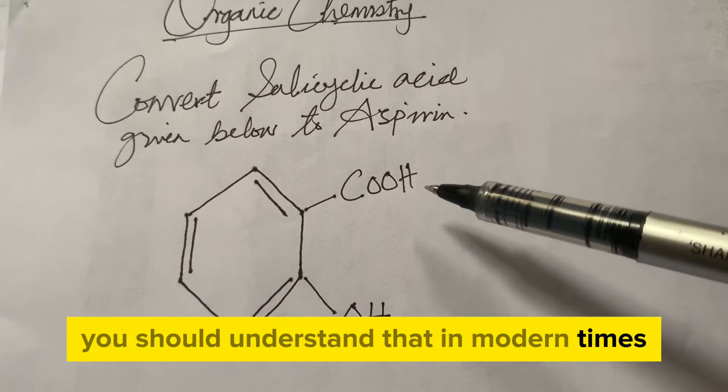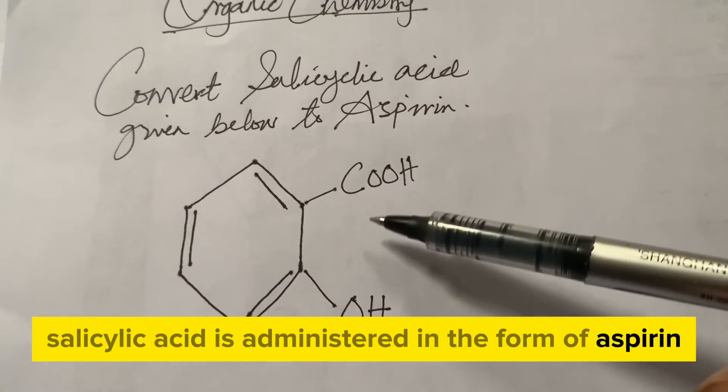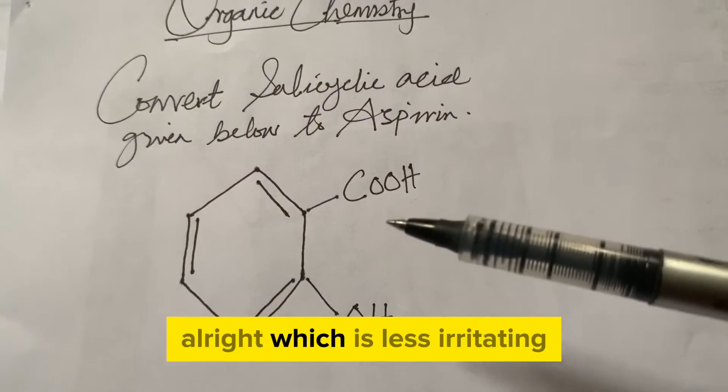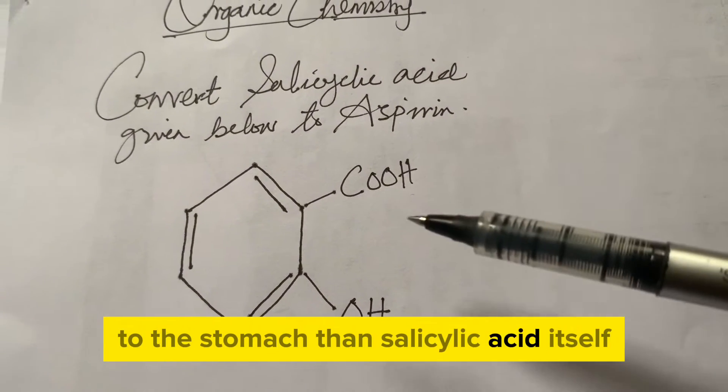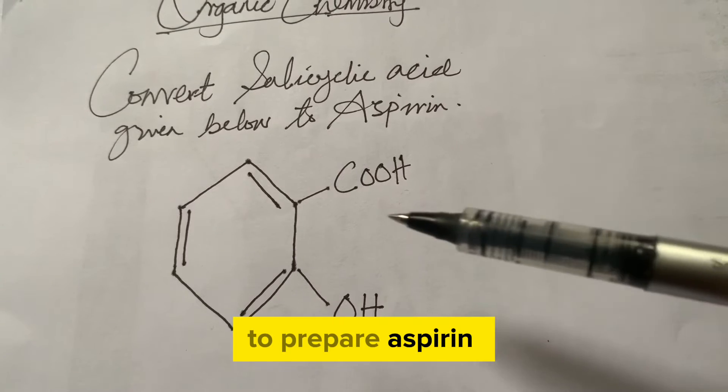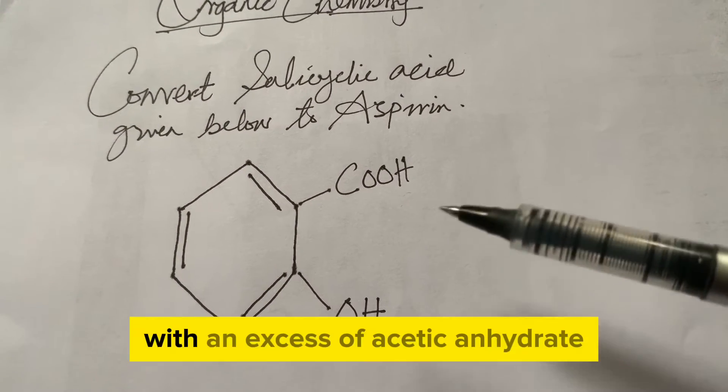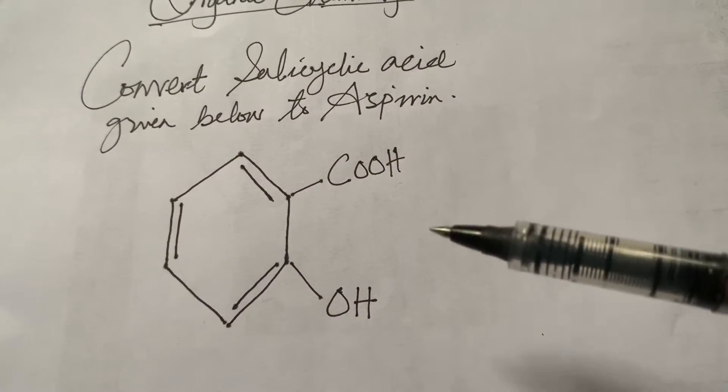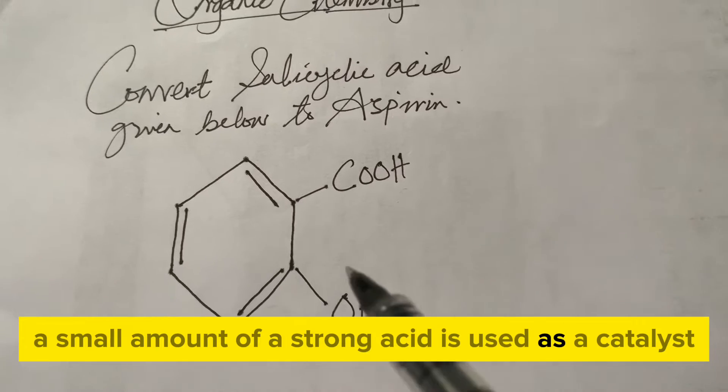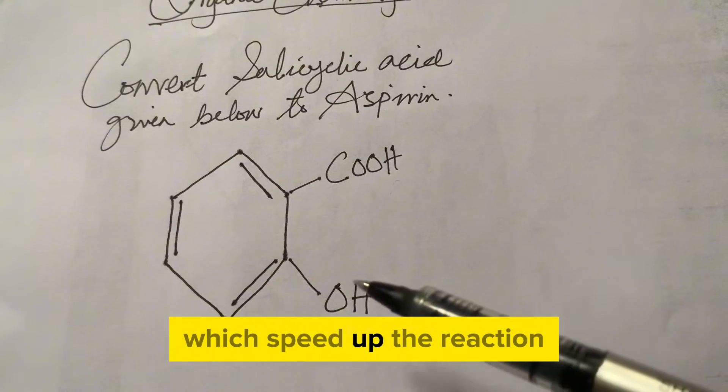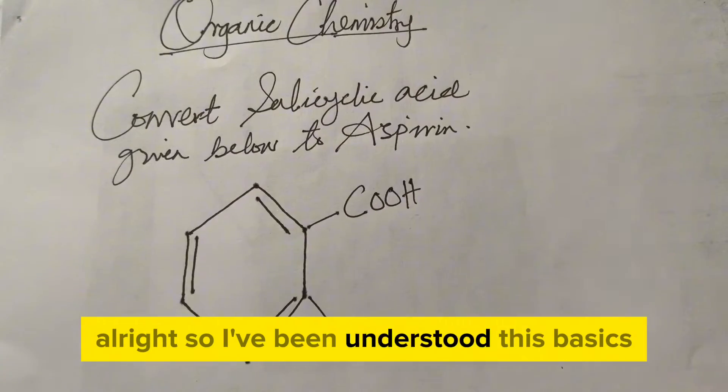Before then you should understand that in modern times salicylic acid is administered in the form of aspirin, which is less irritating to the stomach than salicylic acid itself. To prepare aspirin, salicylic acid is reacted with an excess of acetic anhydride. A small amount of a strong acid is used as a catalyst which speeds up the reaction.